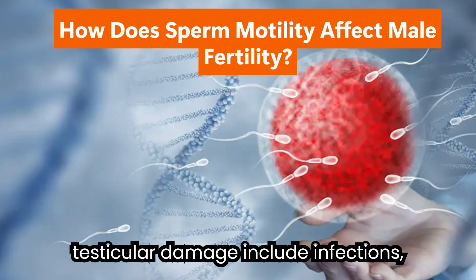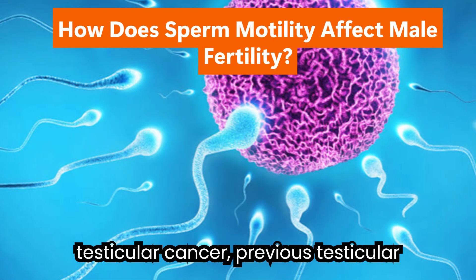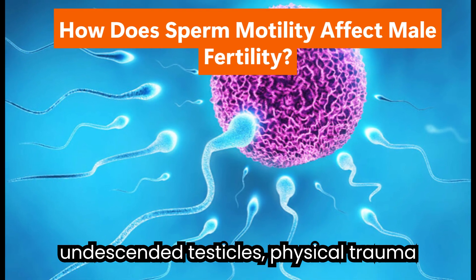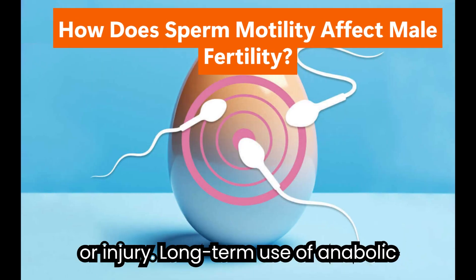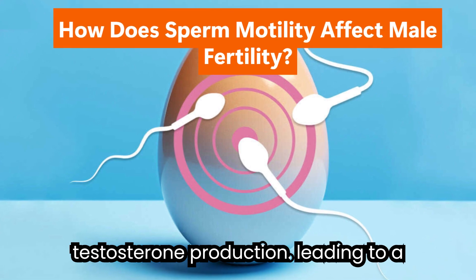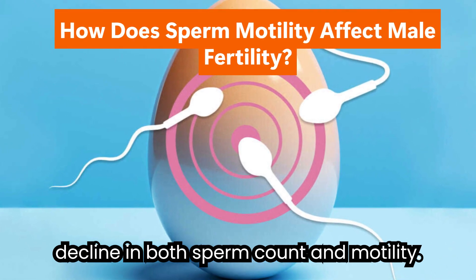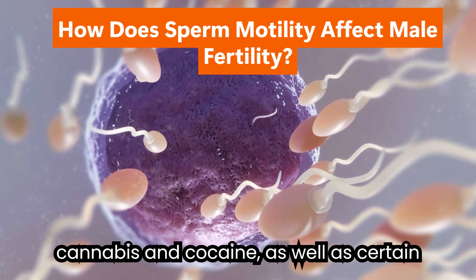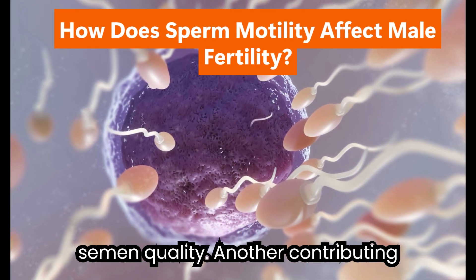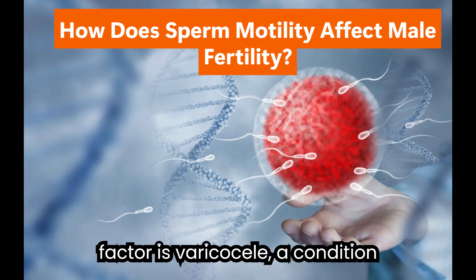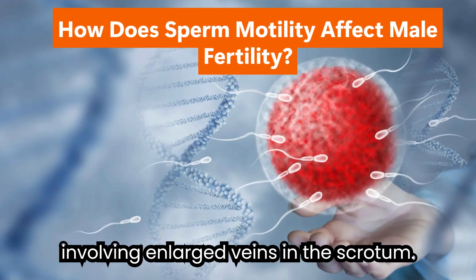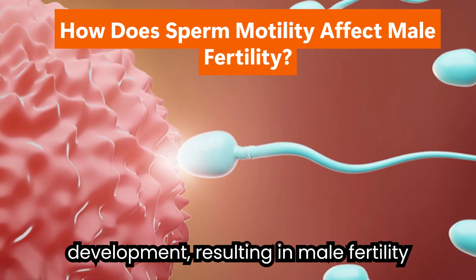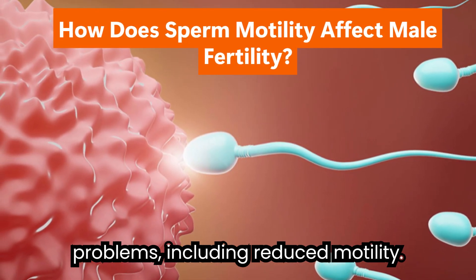Causes of testicular damage include infections, testicular cancer, previous testicular surgery, congenital abnormalities, undescended testicles, physical trauma, or injury. Long-term use of anabolic steroids is known to suppress natural testosterone production, leading to a decline in both sperm count and motility. Additionally, recreational drugs such as cannabis and cocaine, as well as certain herbal supplements, may negatively impact semen quality. Another contributing factor is varicocele — a condition involving enlarged veins in the scrotum — which can increase scrotal temperature and hinder proper sperm development, resulting in reduced motility.